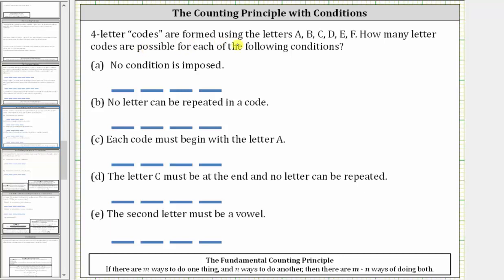Four letter codes are formed using the letters A, B, C, D, E, F. How many letter codes are possible for each of the following conditions? Where each bar represents one letter of the four letter codes.